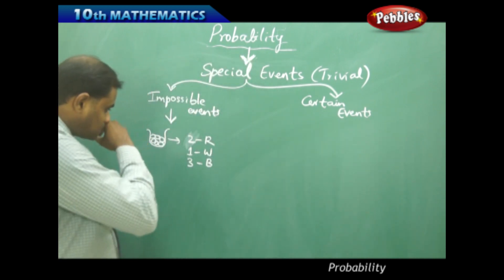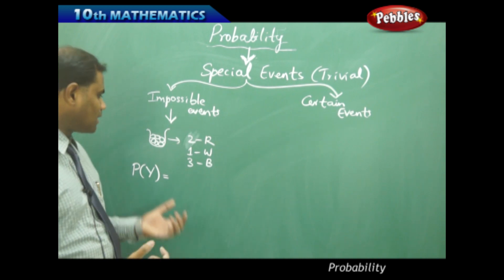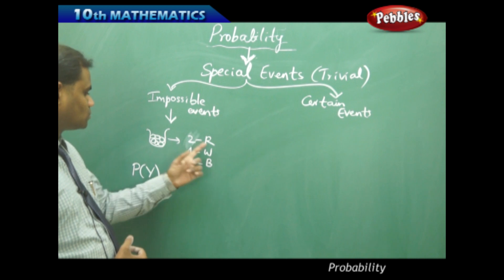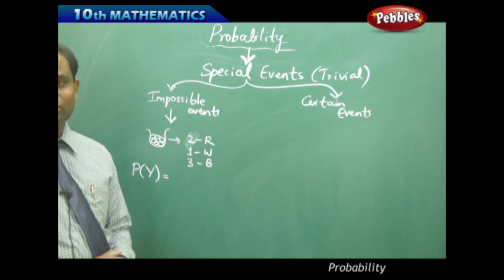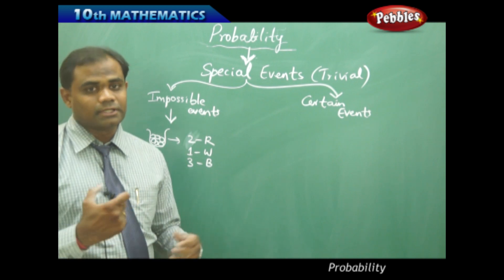Now in this case, the probability of picking a yellow ball out of this bag is impossible because however you search, you don't have a yellow ball inside the bag. You have two red, one white, and three blue.